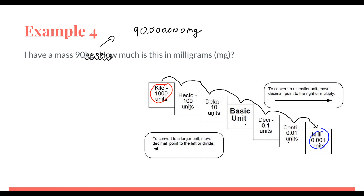So 90 kilograms equals 90 million milligrams. I chose this example for a couple of reasons: it uses the full staircase, and it gives you perspective on how much greater a kilogram is compared to a milligram. The kilogram is the SI unit we regularly use, while milligrams measure very small things — but there are a lot of them in a kilogram. That wraps up this video; if you have any questions, please let me know.